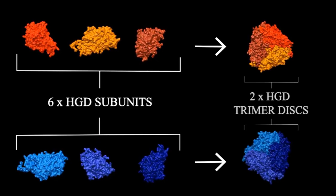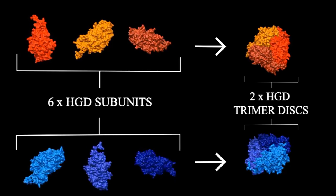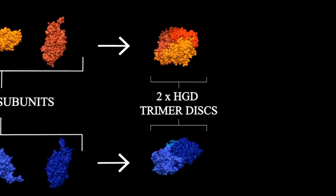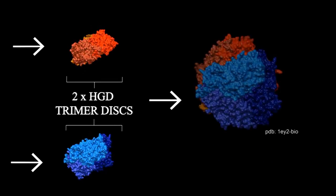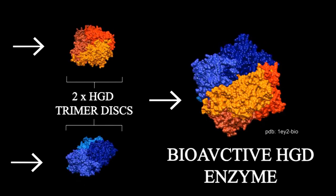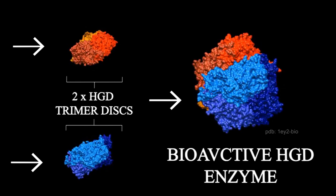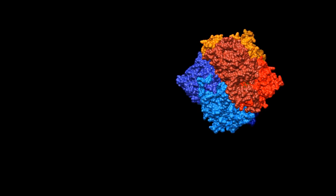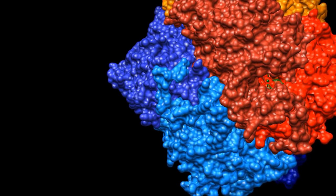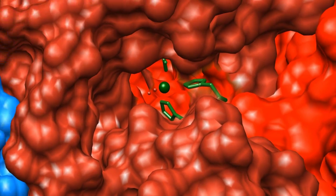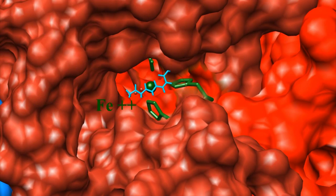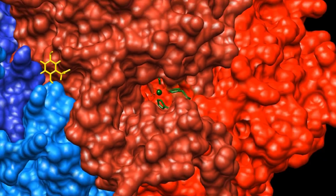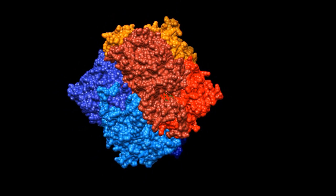3 HGD subunits form a disc called a trimer, and the resultant 2 trimers assemble to form a hexamer to yield the bioactive HGD enzyme. Only this bioactive HGD enzyme is able to convert HGA at its active site with the aid of IN2-Malilacetoacetate, MAA.